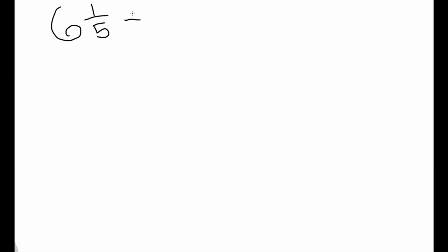Let's simplify the expression six and one-fifth add three and four-fifths. Today we are going to use the improper fraction method to do this. The first step is to write your expression six and one-fifth add three and four-fifths.